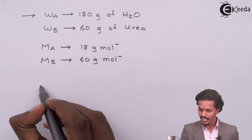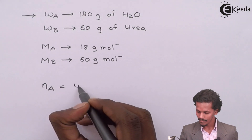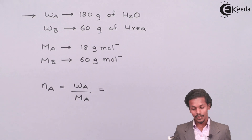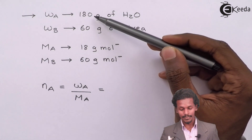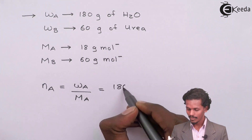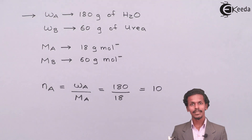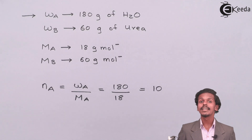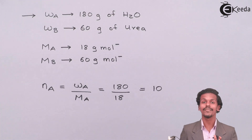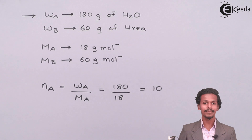To calculate the number of moles of solvent, we use the formula: N_A = W_A divided by M_A. In this case W_A is 180 grams and M_A is 18 g/mol, so 180 divided by 18 gives us 10 moles. Therefore the number of moles of water (N_A) is 10 moles.